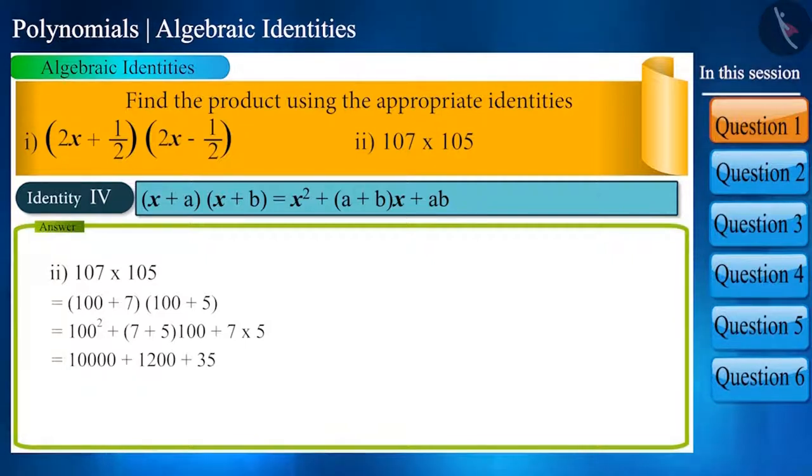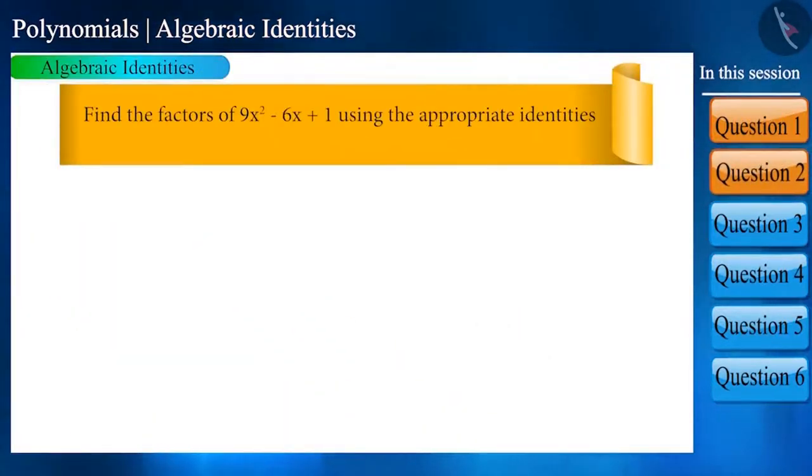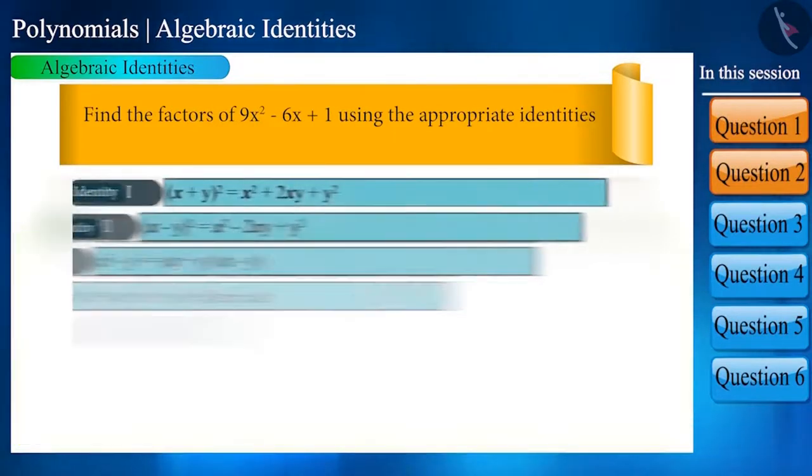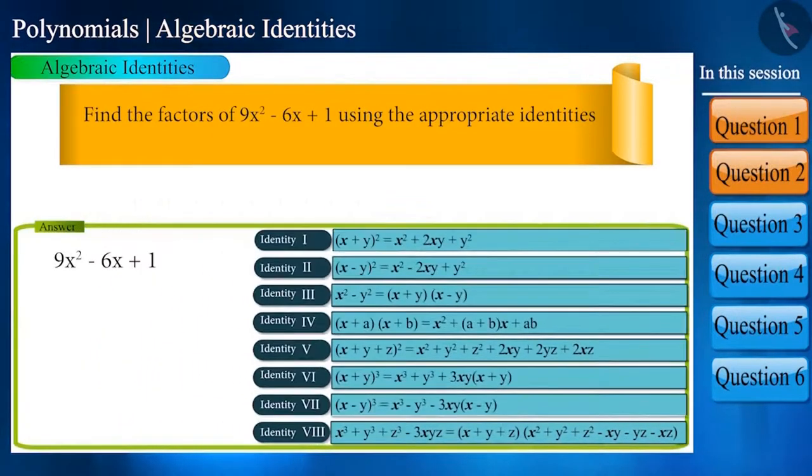Let's move to the next question: find the factors of 9x² - 6x + 1 using the appropriate identities. Which identity does this look like? Can you answer? In such cases, pay attention only to the variable, that is x² - x + something.